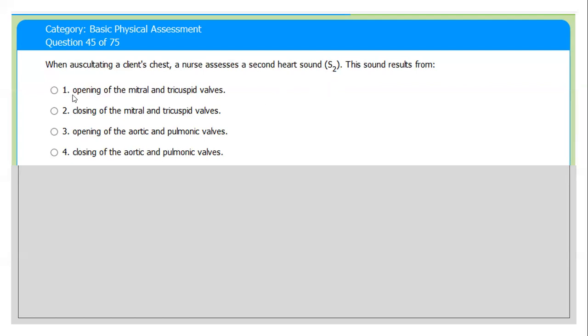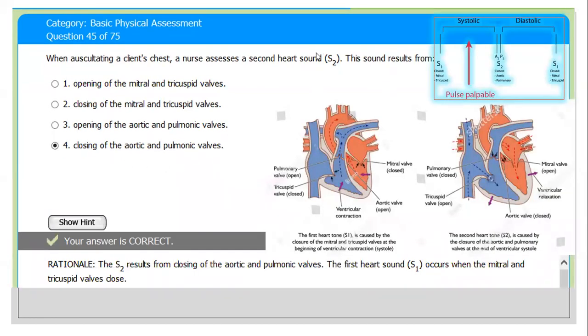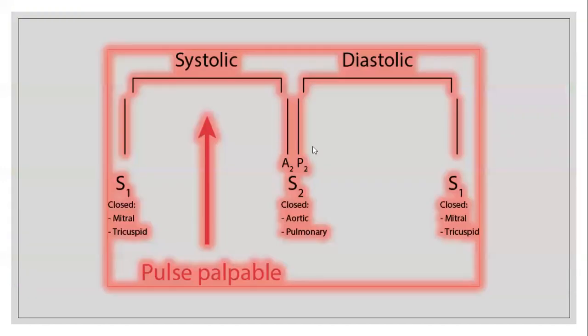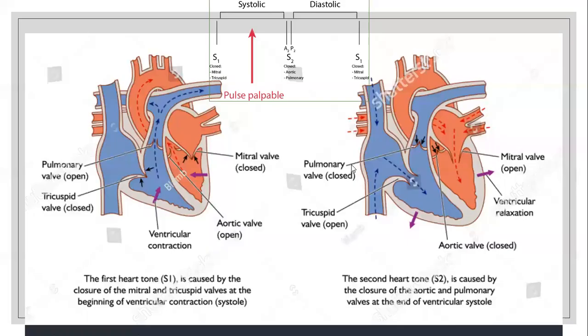S2 is caused by: number one, opening of mitral and tricuspid valves. Number two, closing of mitral and tricuspid valves. Number three, opening of aortic or pulmonary valves. Number four, closing of aortic or pulmonary valves. The correct answer is S2 - closing of aortic and pulmonary valves. In this picture we see the pulmonary valves, tricuspid valves, mitral valves, and aortic valves.